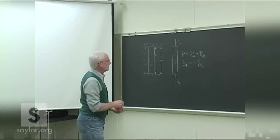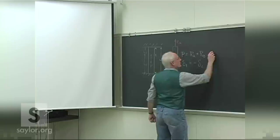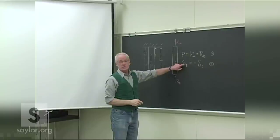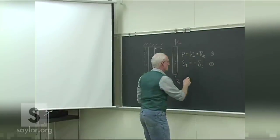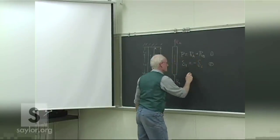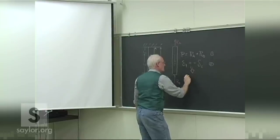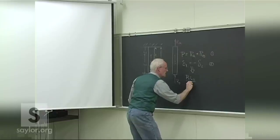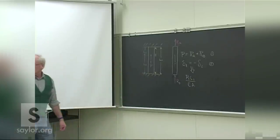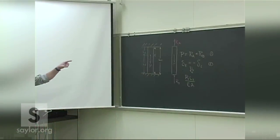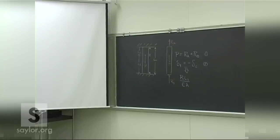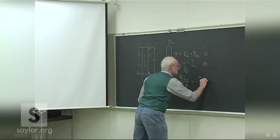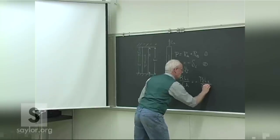So our compatibility equation gives us: P1·L1 over EA = P2·L2 over EA. Since it's the same material and cross-sectional area throughout, the EA cancels. Interestingly, whatever the solution, it's the same regardless of the material or cross-sectional area — those do not factor into it at all.